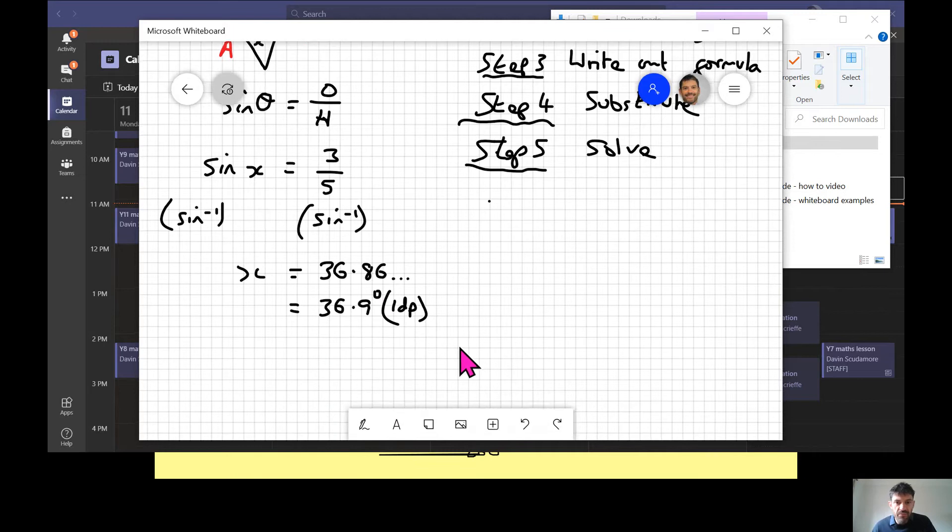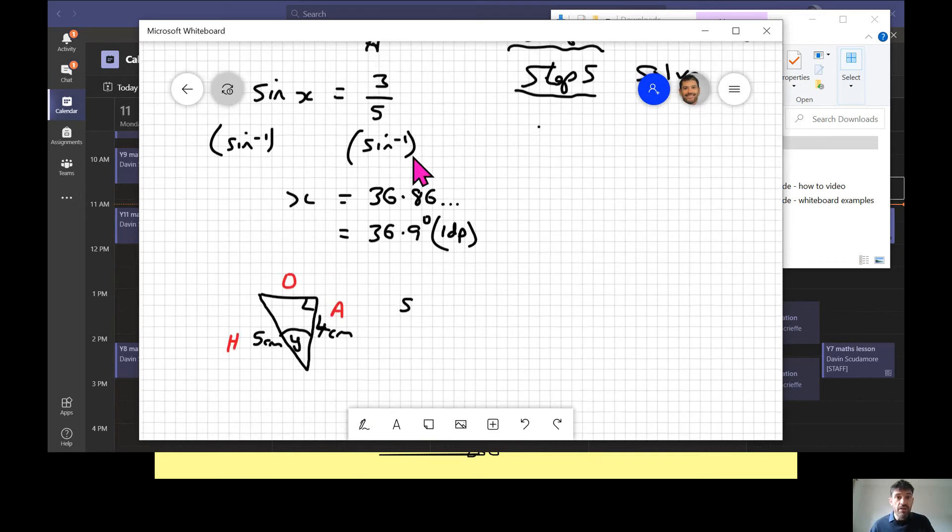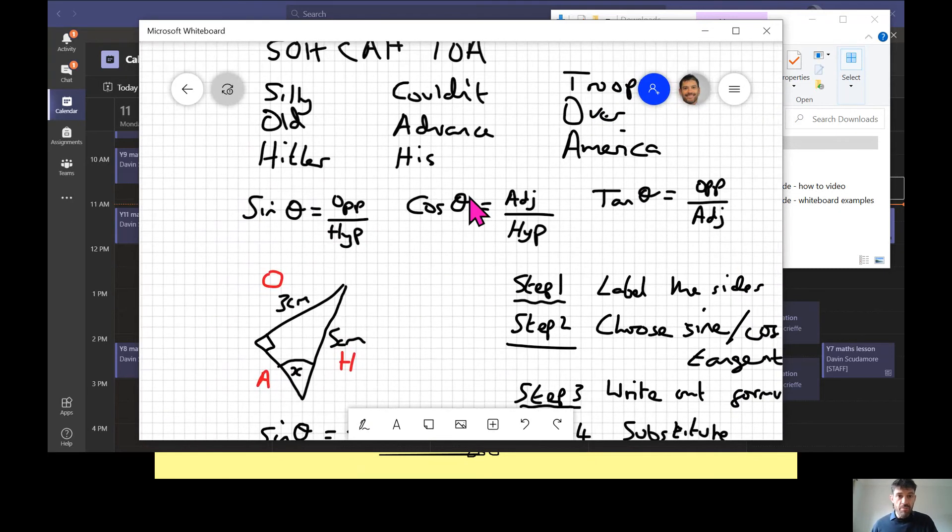Copy that down please. Let's do two more. We don't need to write out the steps this time—steps are always the same. Let's find this angle, we'll call it y. I want cos, so I want this to be five again and this to be four. Step one: label the sides H, O, A. Today we're looking at A and H. Step two: if you look back, cos is A and H.